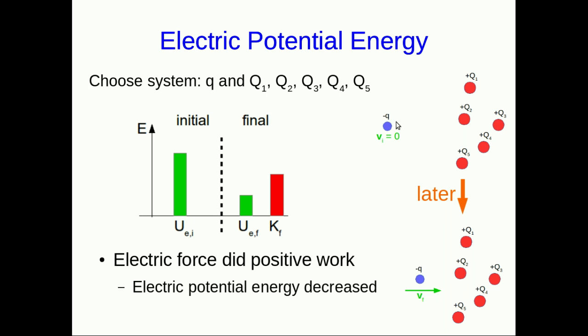Here the electric force did positive work, right? It was pulling on this charge as the charge moved that way. The force was in the direction of motion, and so that work done was positive, and the electric potential energy decreased.